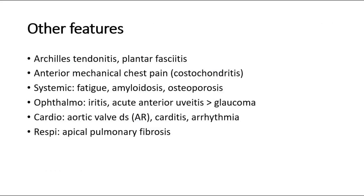Other features include Achilles tendonitis and plantar fasciitis. Anterior mechanical chest pain due to costochondritis and fatigue may occur. In around one-third of patients there is acute iritis, which may lead to blindness if left untreated. Systemic features include fatigue, amyloidosis, and osteoporosis. Ophthalmological features besides the iritis include acute anterior uveitis, which can lead to glaucoma in some patients.